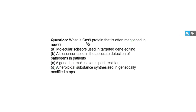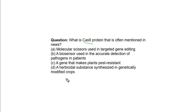What is Cas9 protein that is often mentioned in news? Options: A molecular scissors used in targeted gene editing; a biosensor used in accurate detection of pathogens in patients; a gene that makes plants pest resistant; a herbicidal substance synthesized in genetically modified crops. Your answer is option number A — molecular scissors used in targeted gene editing.